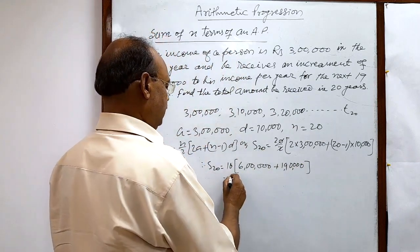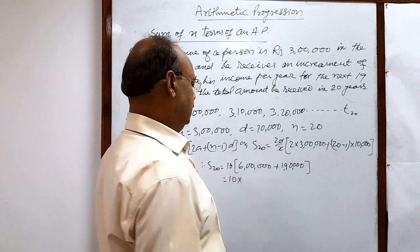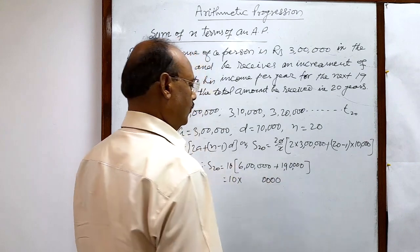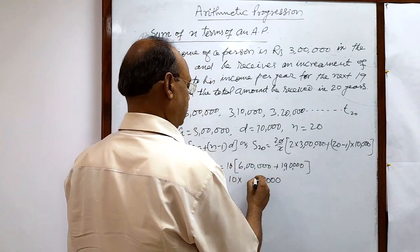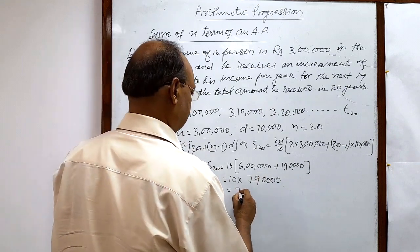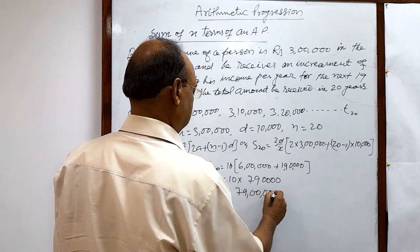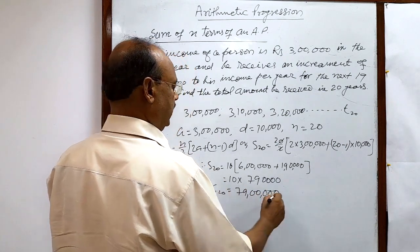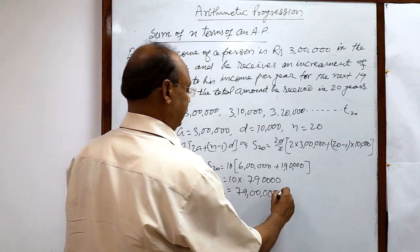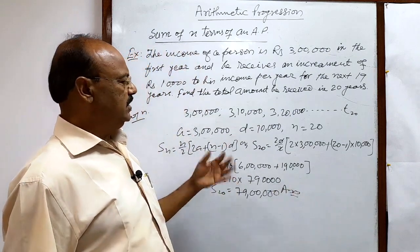This is equal to 10 times, let us add these two numbers: 60 plus 19 is 79, and this is equal to 79 lakhs.